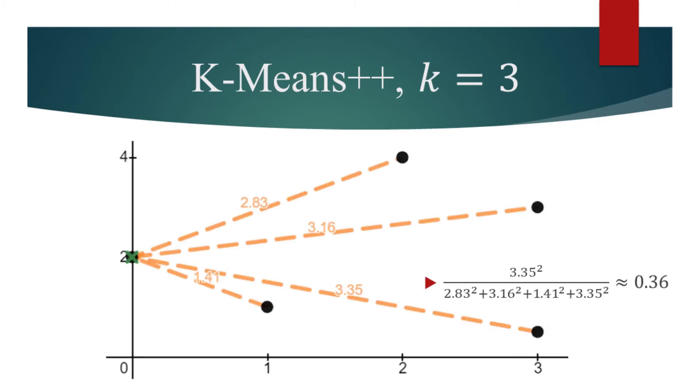Finding the Euclidean distances to the nearest centroid from each data point, we see that the bottom right data point is the most distant.